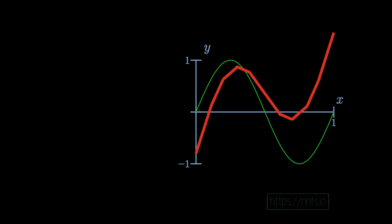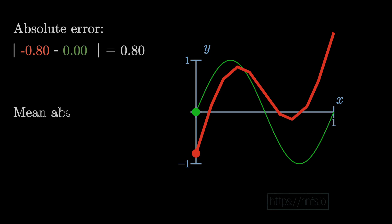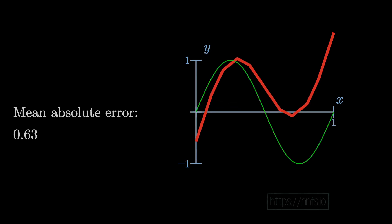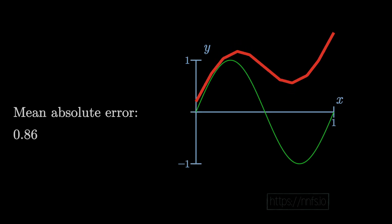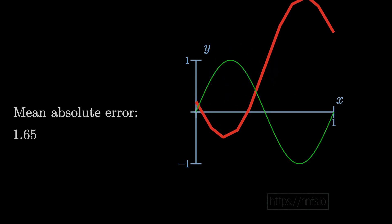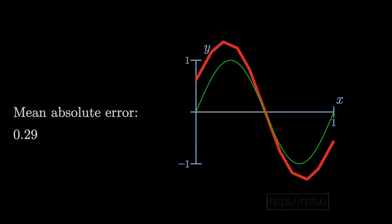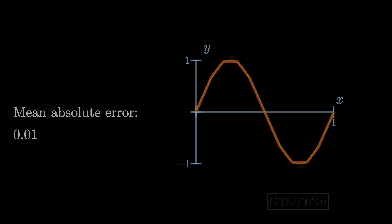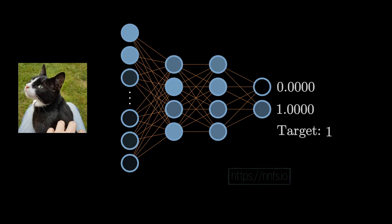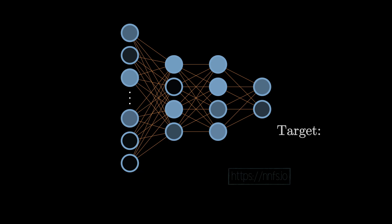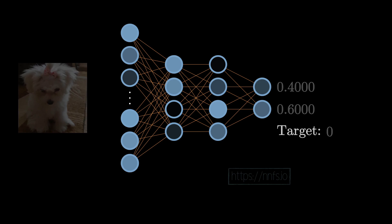A simple example of a loss function is mean absolute error, used with regression — where we're trying to output a specific value rather than a probability distribution. With mean absolute error, you take the average of the distances between predicted values and target values. As you get closer to the correct value, the mean absolute error gets lower; as you get further away, it grows. This is more informative than simply being right or wrong. In our case, rather than regression, we're doing classification with a softmax activation function, so our model outputs a probability distribution.